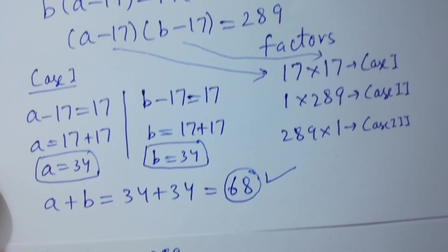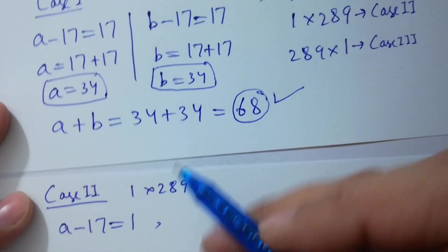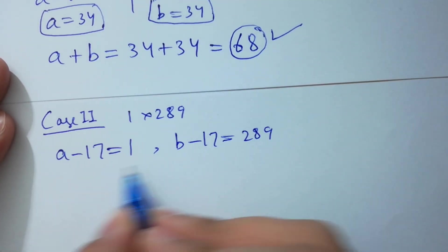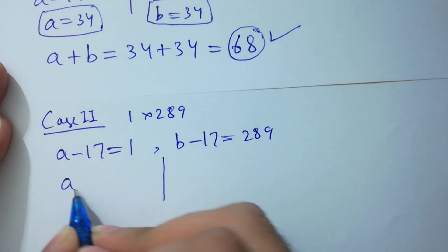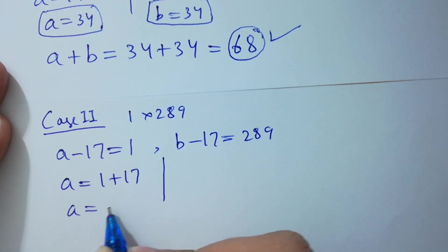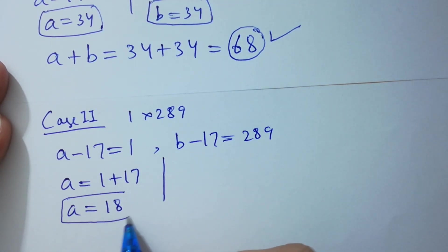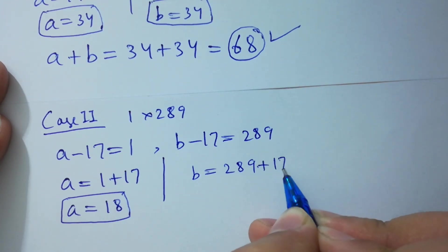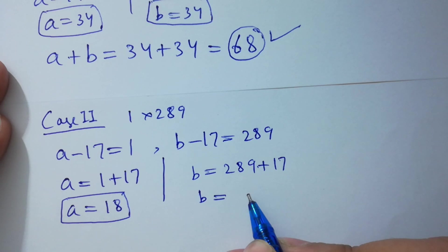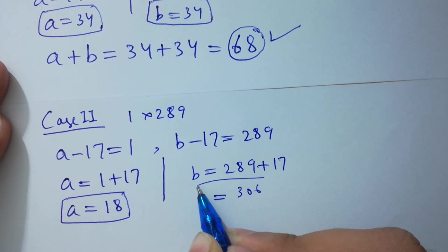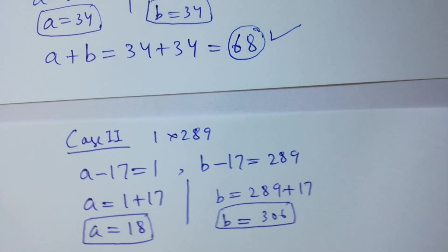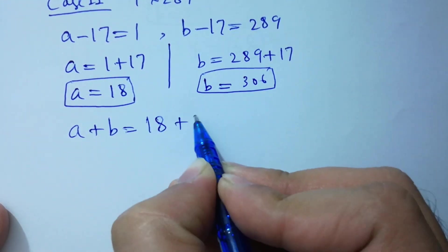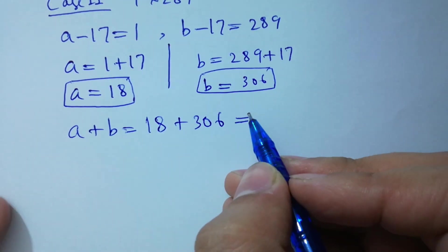Case 2 is 1 times 289. So a minus 17 equals 1 and b minus 17 equals 289. Then a equals 1 plus 17 equals 18, and b equals 289 plus 17 equals 306.